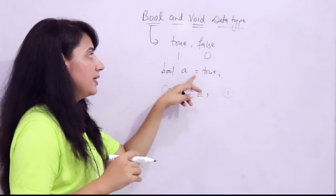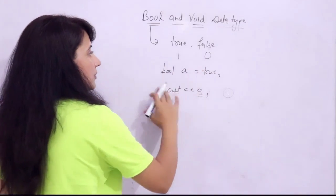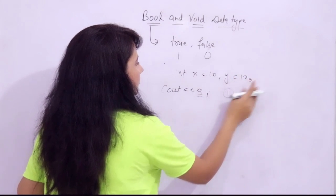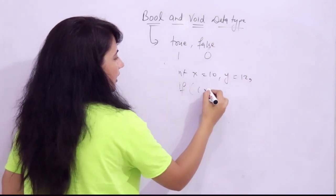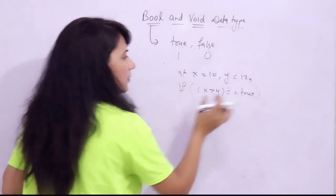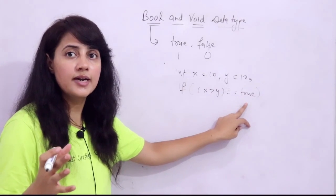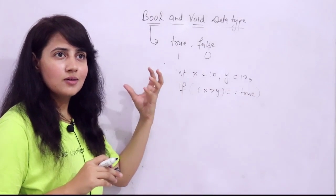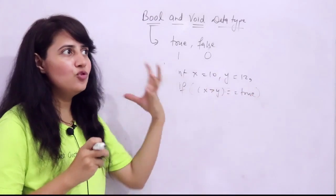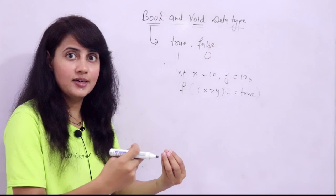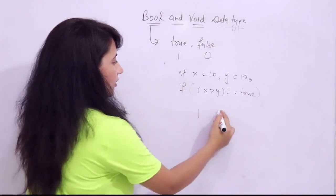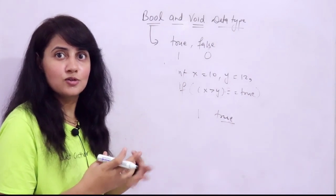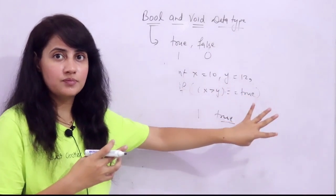We generally use bool in conditional statements. For example, if you have int x = 10 and y = 12, you can check if x > y == true. You can write true rather than 1, or false rather than 0. Writing true and false increases readability and is more understandable compared to just writing 1 or 0. So you can use true or false directly in conditional statements.